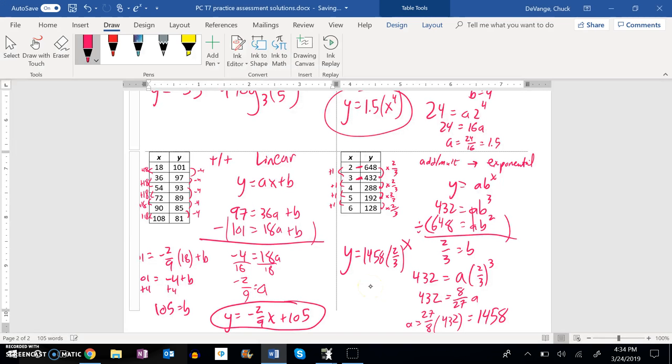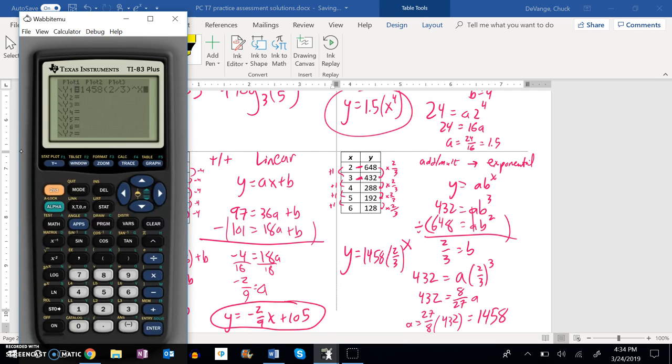And check the table on this. I have my entries two, three, four, five, six: 648, 432, 288. Yep, matches great. So that is the answer to that one.